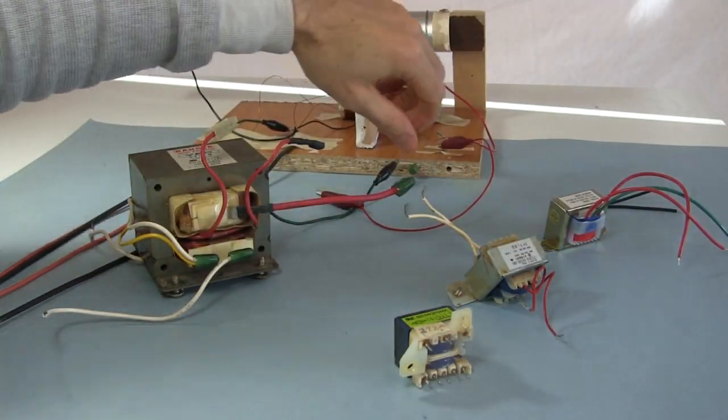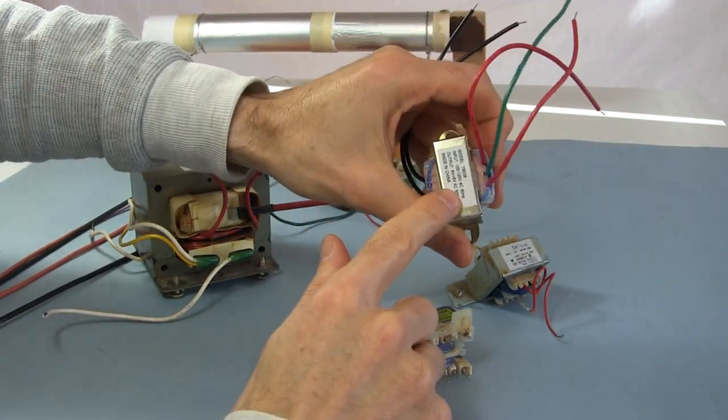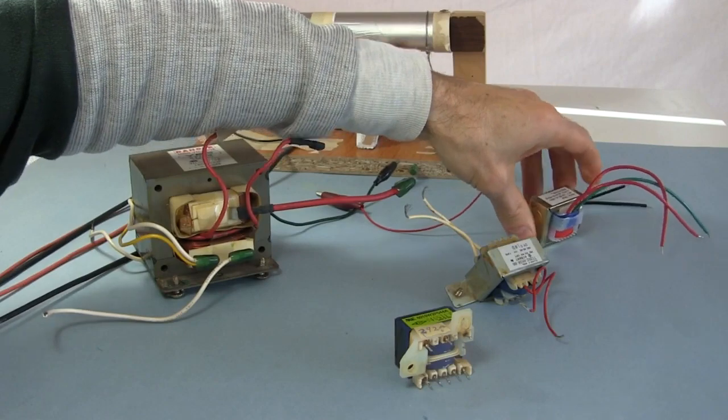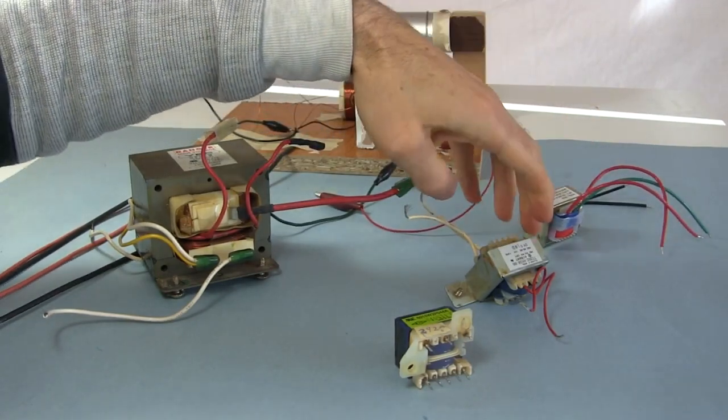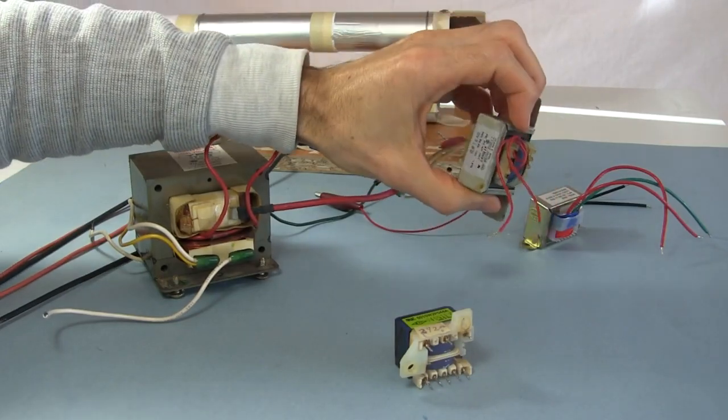So these are the various transformers I've tried. This is the one I've been showing and that works very well. This is a doorbell transformer which I got from a local electronics store. You might be able to buy them from a place like Home Depot. This one I don't know where I got it from. It works almost as well as a doorbell transformer.